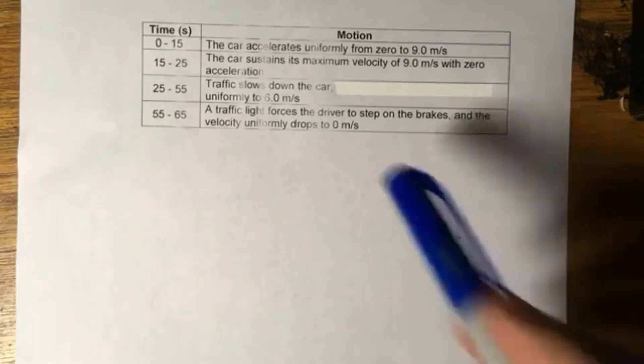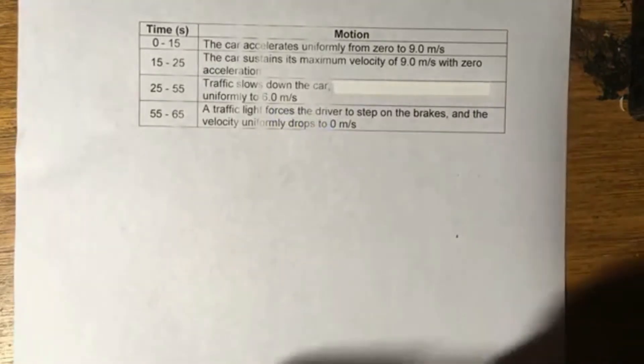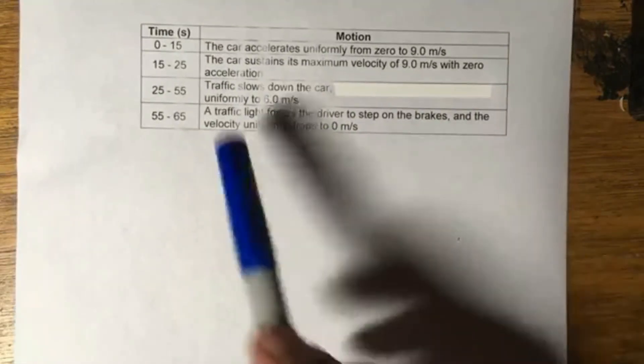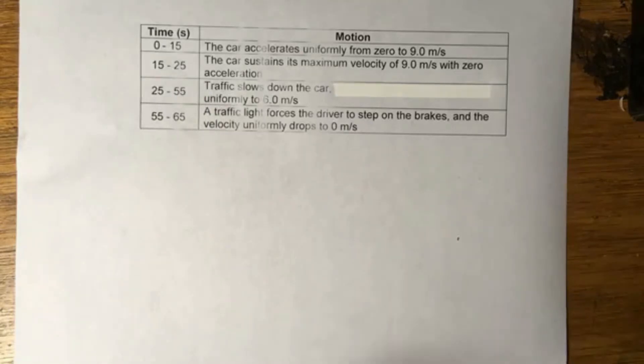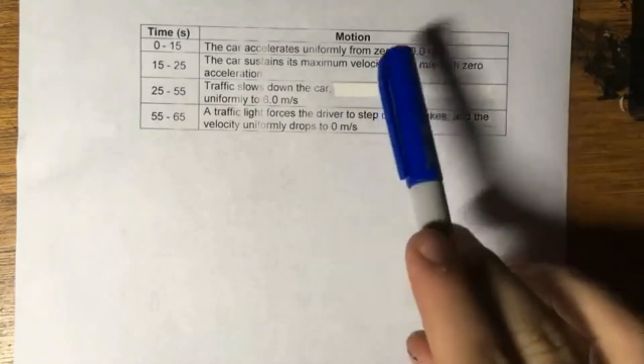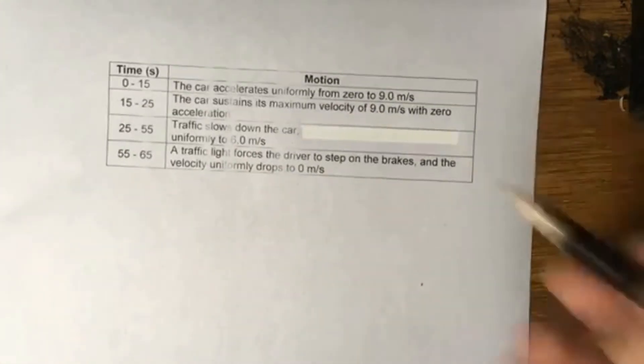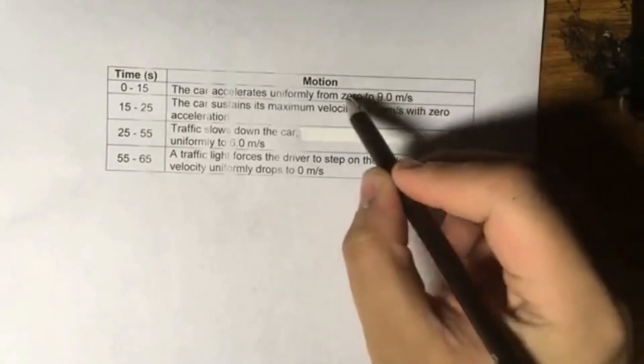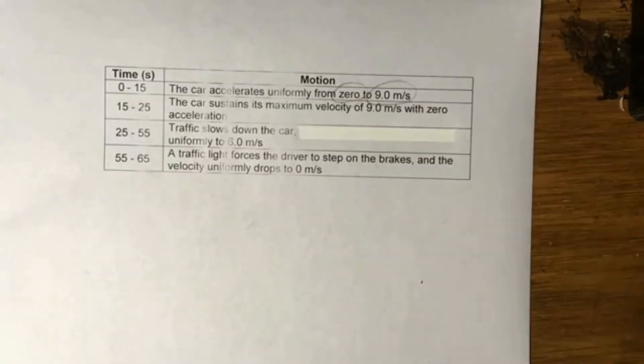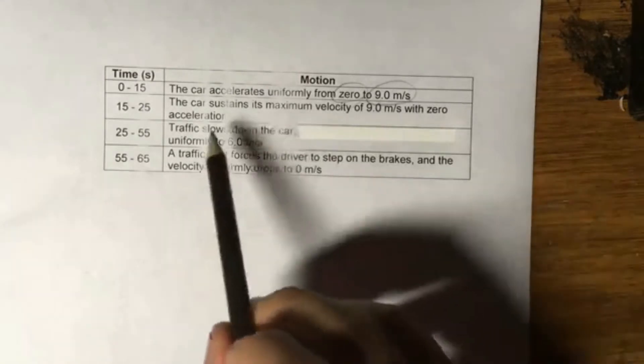So this is a chronicle of the motion experienced by a car. Let me just read. From 0 to 15 seconds, the car accelerates uniformly from zero to 9 meters per second. And I think this is where I will display a bit of some techniques in problem solving. Always encircle or underline important details, especially numbers.